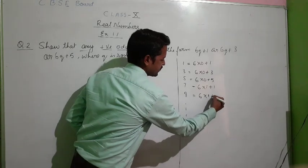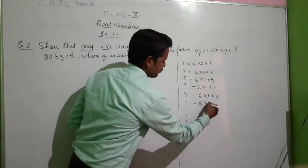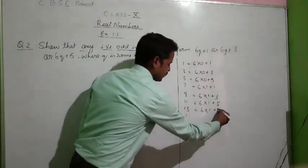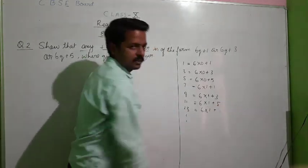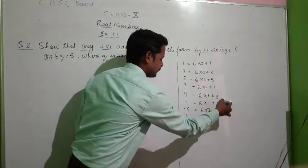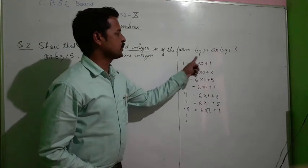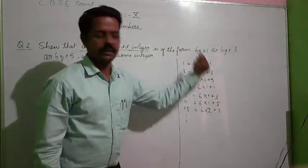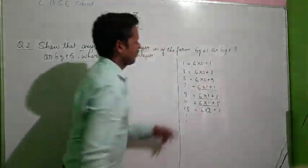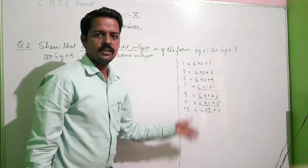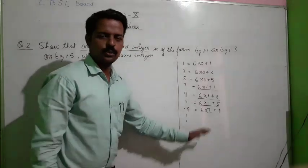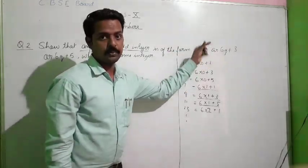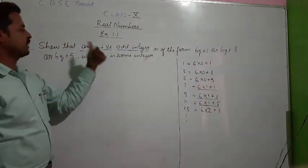For 9, we can write 6×1+3. For 11, we get 6×1+5. For 13, we get 6×2+1. Now you can see clearly: 6 into something plus 1 gives us odd numbers; all positive odd numbers we are getting as 6q+1, 6q+3, or 6q+5. This pattern starts repeating. So we can represent all positive odd integers in the form 6q+1, 6q+3, or 6q+5.